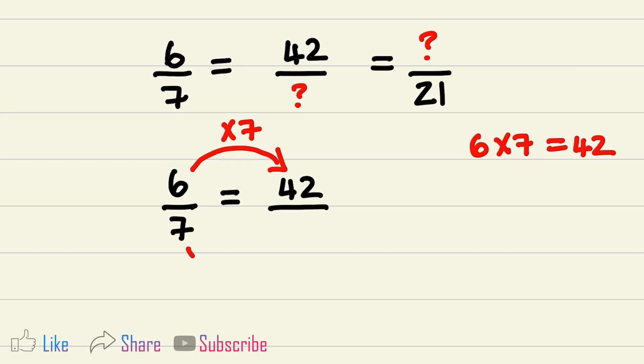And I need to do that same calculation in the denominator. So I need to multiply 7 by 7, and 7 multiplied by 7 will give us 49. That means that 6 over 7 is equal to 42 over 49.